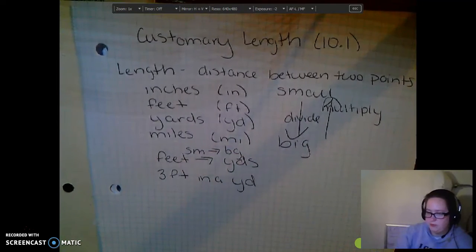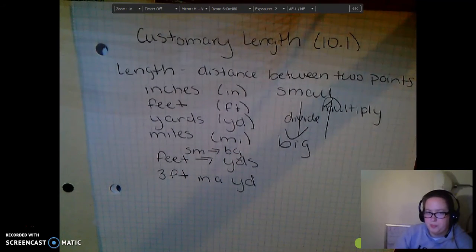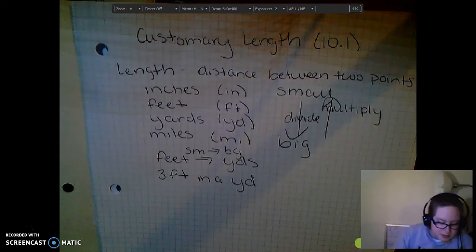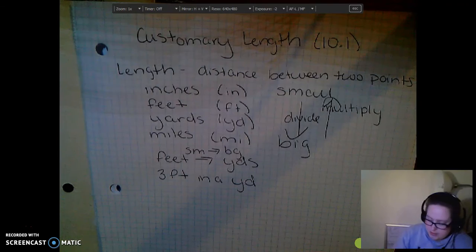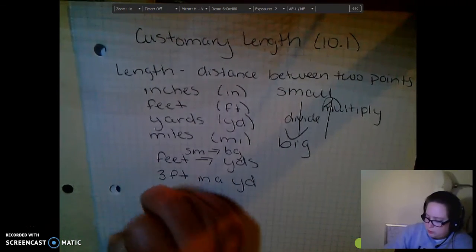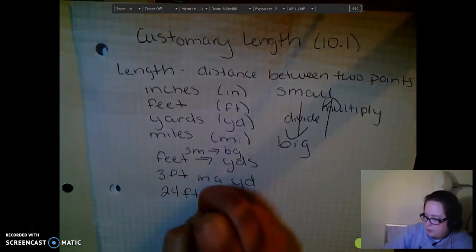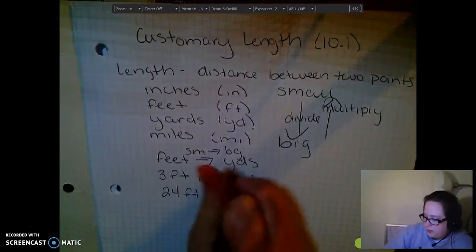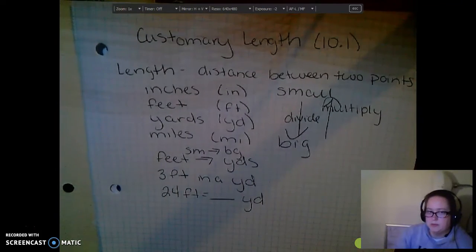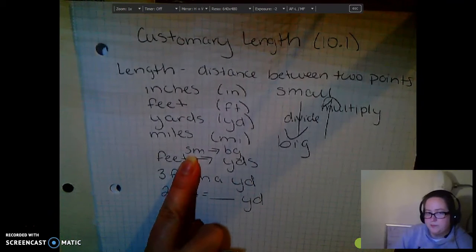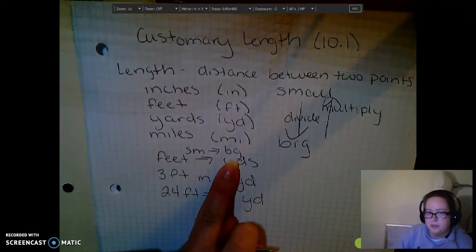There are three feet in a yard. Three feet, one yard. So, if we know that we have, let's say, 24 feet, we want to know how many yards that equals. Well, we're going from small to large, small to big.